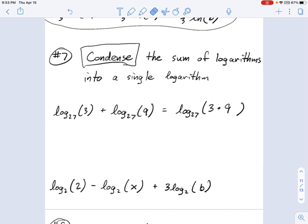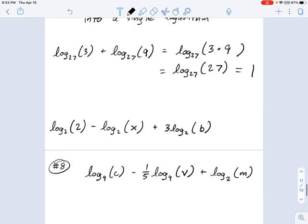And now, once you have that 3 times 9 in there, you can say, well, that's just 27, right? And every now and then, you'll have something that works out cute, like in this example, where log base 27 of 27, well, that's just equal to 1. So that's a bit of a math joke right there.